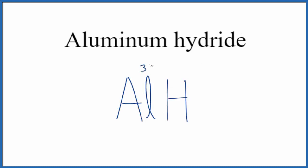We said aluminum is 3+, and when we have this hydrogen bonded to a metal, it's going to be 1-minus.